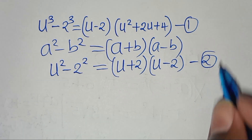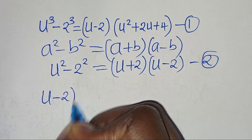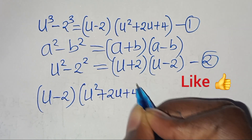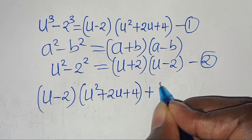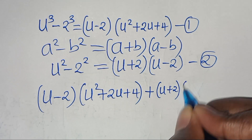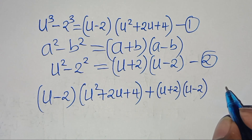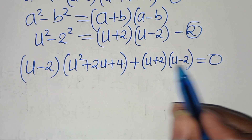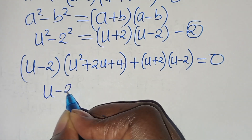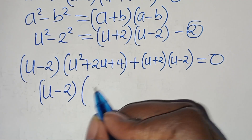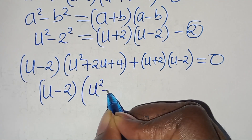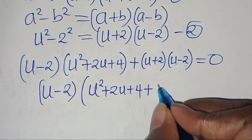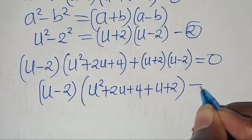Let's combine equation 1 and equation 2, so that we have u minus 2, times u squared plus 2u plus 4, plus u plus 2 times u minus 2, this is equal to 0. Since u minus 2 is common here, we can factor out u minus 2, so that into the parentheses we have u to the power of 2 plus 2u plus 4, plus u plus 2. This is equal to 0.